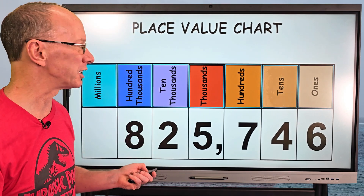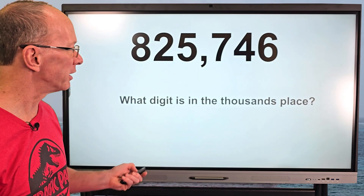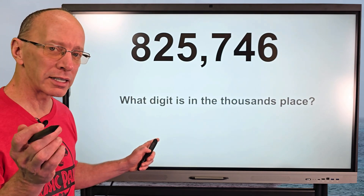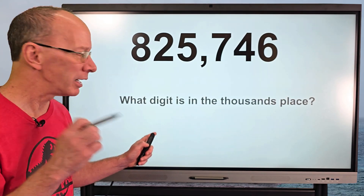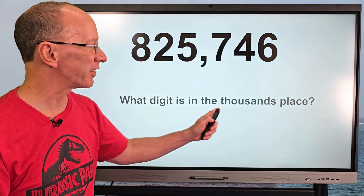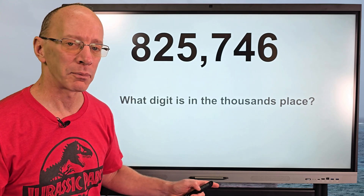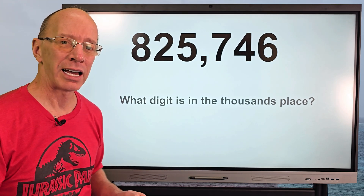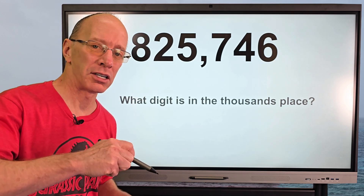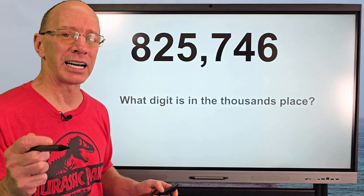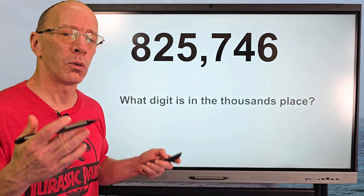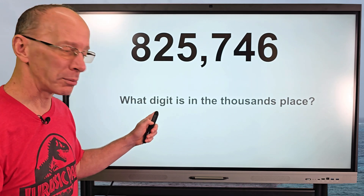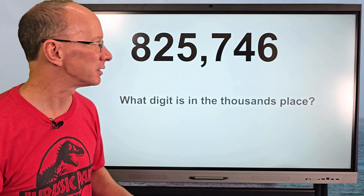Let's take a look at some questions on this big number right here. Now do you remember the chart that I just showed you? Which digit is in the thousands place? Now if you take a look at this word digit, that means a number between zero and nine. It's another word for number.